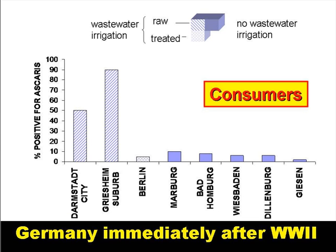Now we're looking at ascaris prevalences in several German cities immediately after World War II — specifically, ascaris prevalences in the general population who ate irrigated salad crops. In Darmstadt, where untreated wastewater was used for crop irrigation, the prevalence was around 50%, and in one suburb, Greisheim, it was about 90%. But in Berlin, where treated wastewater was used for irrigation, the prevalence of ascaris was much lower, under 5%, and about the same as in cities which didn't use wastewater for irrigation. In Berlin, the treatment used was conventional treatment: primary sedimentation, trickling filters and secondary sedimentation, and the two periods of sedimentation effectively removed most, if not all, of the ascaris eggs.